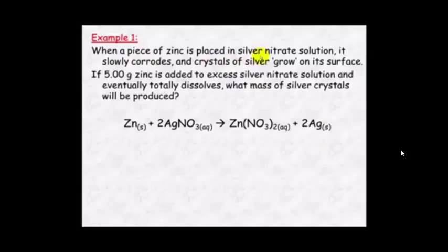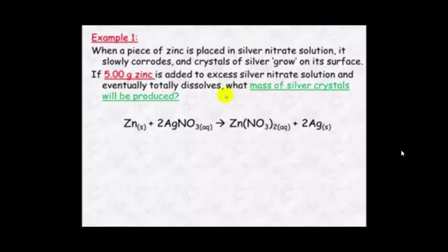When a piece of zinc is placed in silver nitrate solution, it slowly corrodes and crystals of silver grow on its surface. If 5 grams of zinc is added to excess silver nitrate solution and eventually totally dissolves, what mass of silver crystals will be produced? We're given 5 grams of zinc, and zinc becomes your known species.